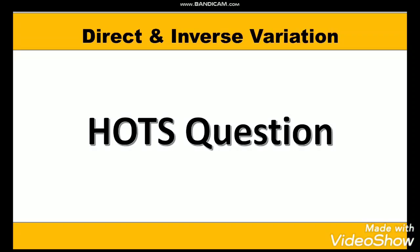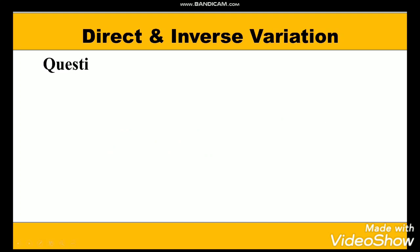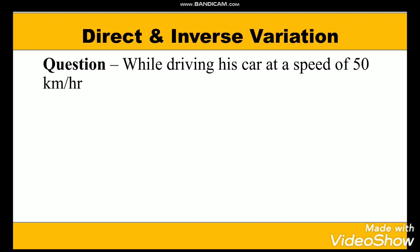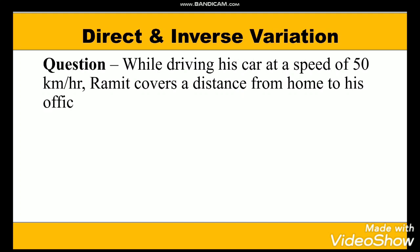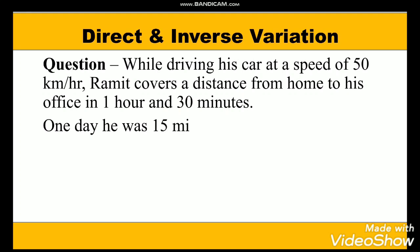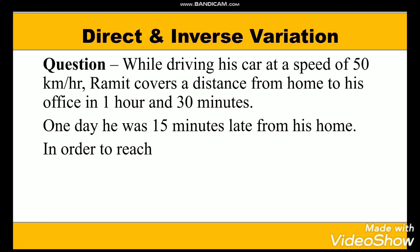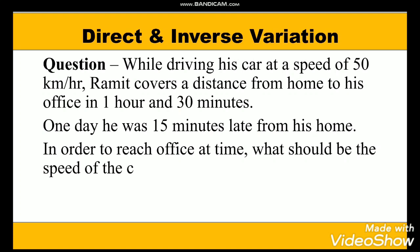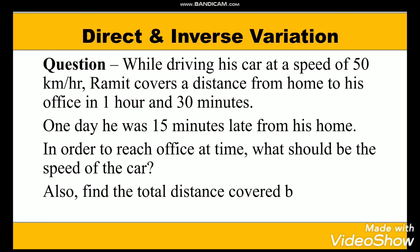Hello everyone, let's take up a HOTS question related to direct and inverse variation. The question goes like this: while driving his car at a speed of 50 km per hour, Ramit covers the distance from home to his office in 1 hour 30 minutes. One day he was 15 minutes late from his home. In order to reach the office on time, what should be the speed of the car? Also find the total distance covered by Ramit daily.